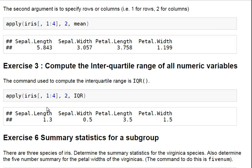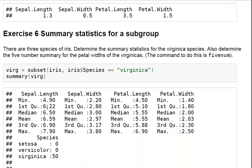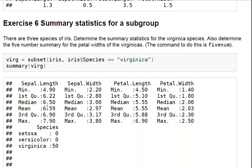Now, I've sort of chopped out a few exercises. So, I've jumped from three to six. Just for the sake, I should have renumbered them, but for the sake of brevity, I just sort of went here for exercise six. Now, there are three species of iris. Determine the summary statistics for the Virginica species only. Also, determine the five number summary for the petal widths of the Virginicas. And the command for that is five number. So, what I'm going to do is actually set up this data set here, Virg, V-I-R-G. And what I want to do is, I want to subset it such that we're only dealing with the species of iris that are Virginica.